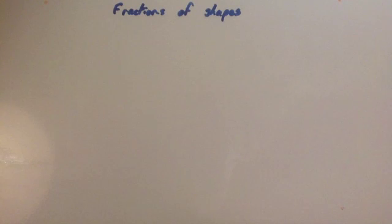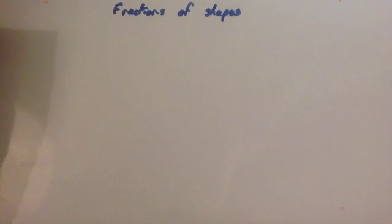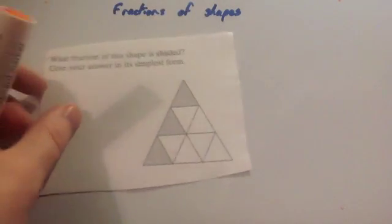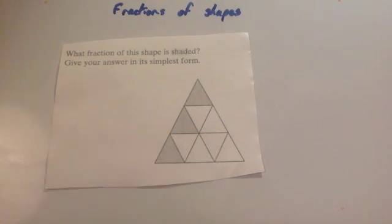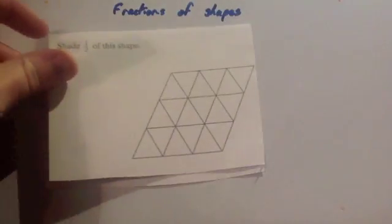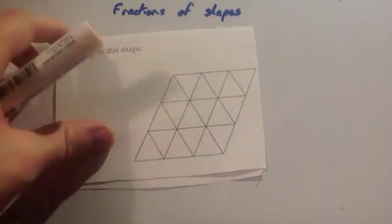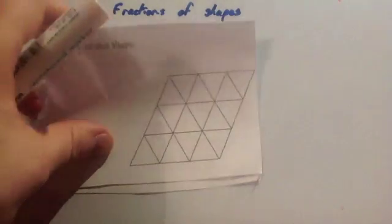We're now going to look at the video on fractions of shapes. These questions usually come in two different ways. One is they give you a shape, they've shaded in some of it, and you've been asked to work out what fraction of the shape is shaded. Or another type of question is where they give you a shape and you've got to shade in a certain fraction of it.